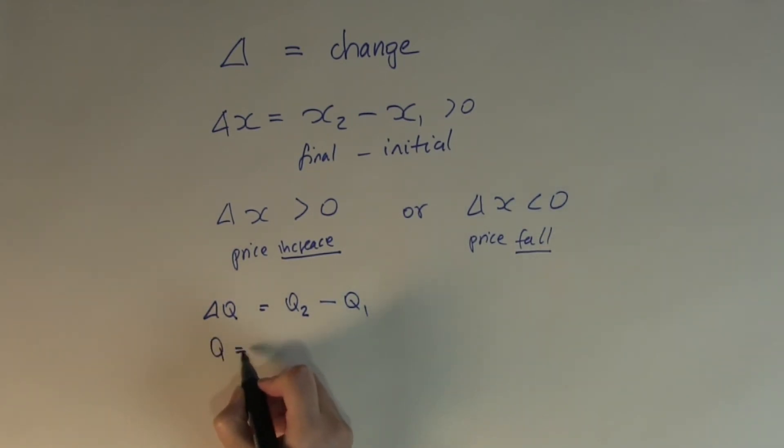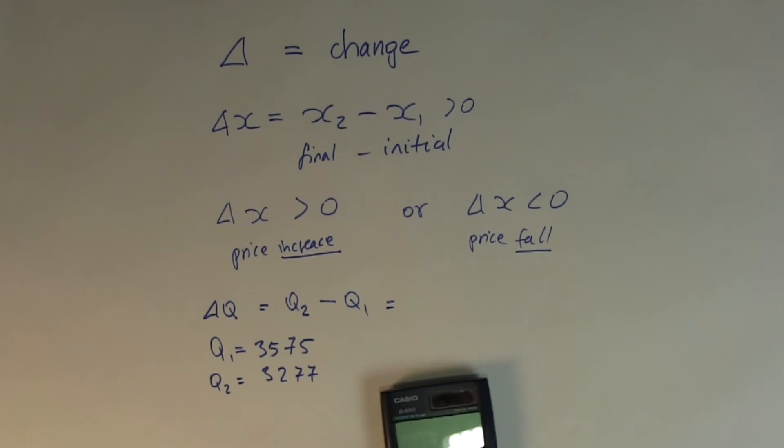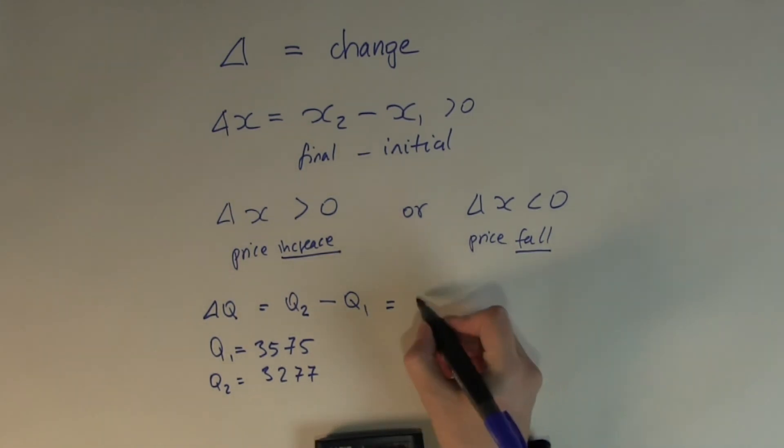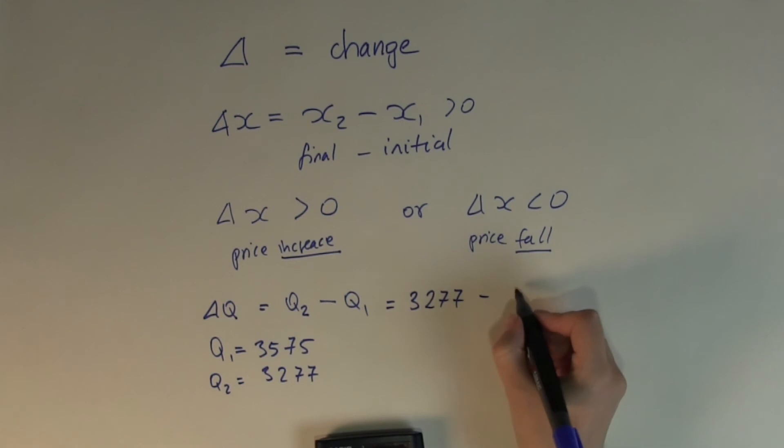The initial quantity was 3575 and the final quantity is 3277. So the change will be, picking up the calculator, just quickly type in 3277 minus 3575.